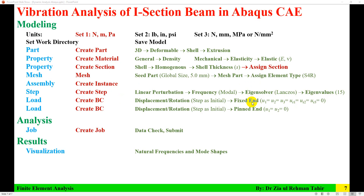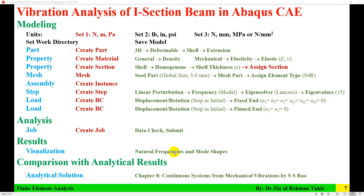For the fixed end condition, the boundary conditions are taken as U1, U2, U3 — all translational and rotational degrees of freedom are set to zero. For the pin end, U1 and U2 are set equal to zero. Then I created a job, followed by visualization of the results to get the first three mode shapes and a comparison with analytical results.